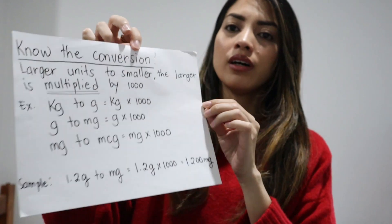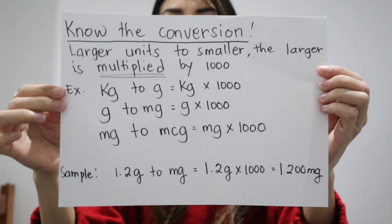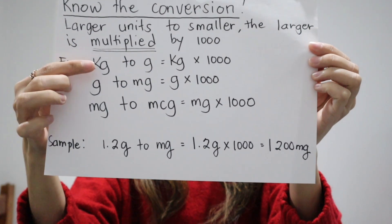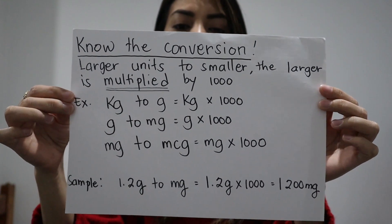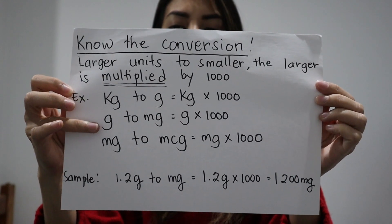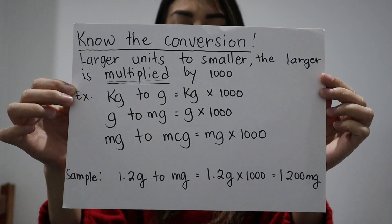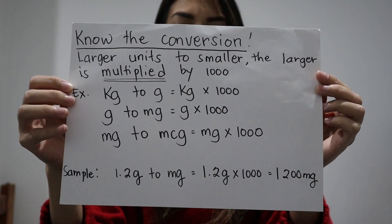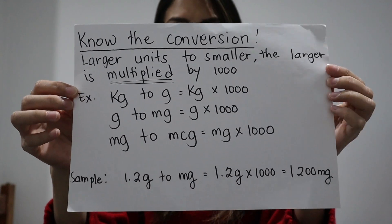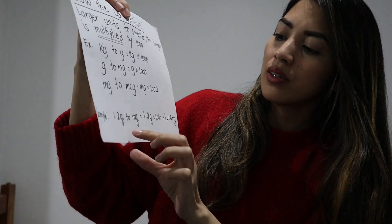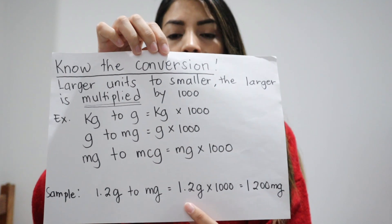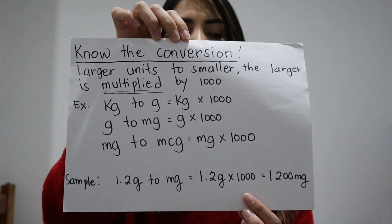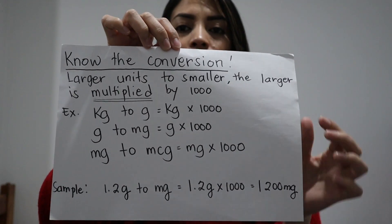When you convert larger units to a smaller one, you need to multiply by 1000. So kilogram to gram — multiply by 1000. Gram to milligram — multiply by 1000. Milligram to microgram — multiply by 1000. For example, 1.2 grams converted to milligrams: multiply 1.2 by 1000, and you get 1200 milligrams.